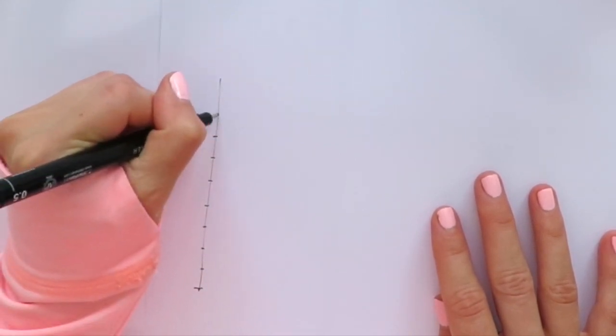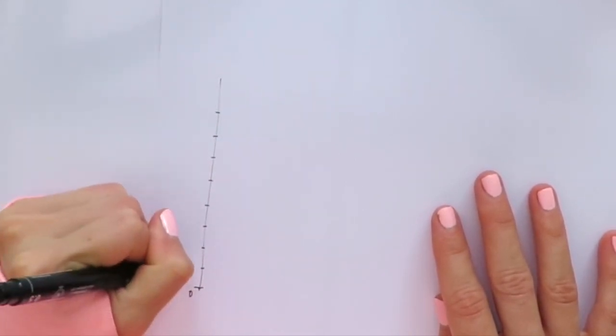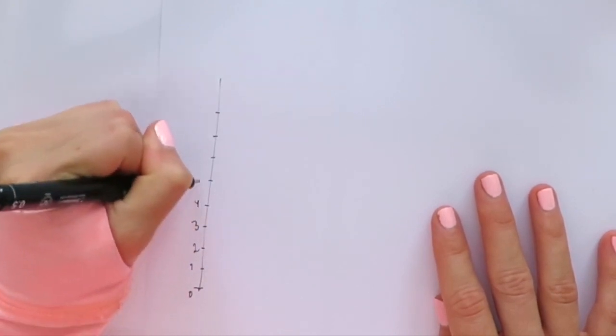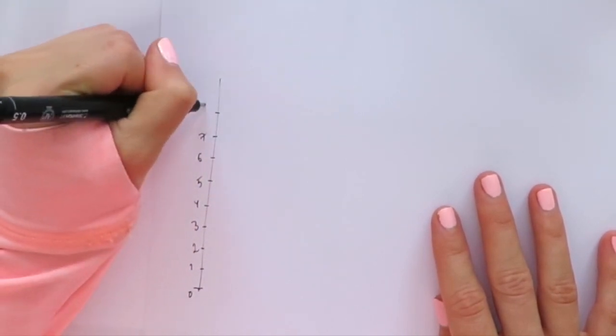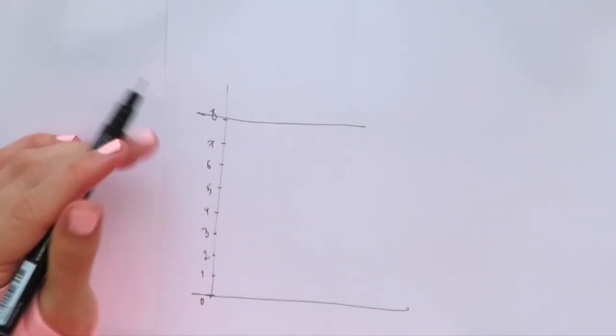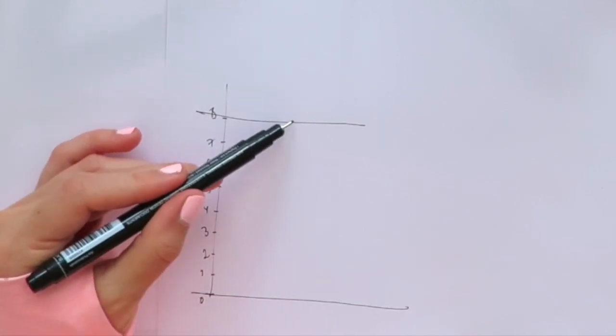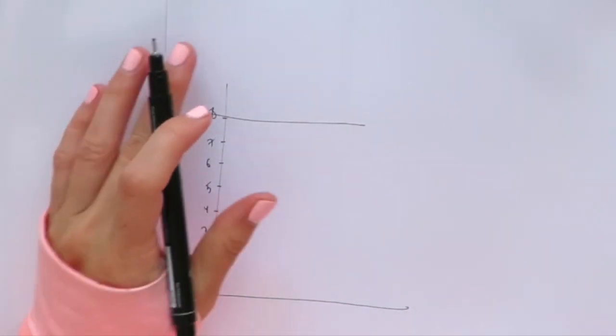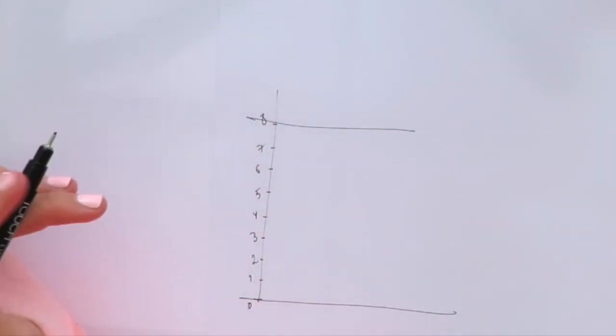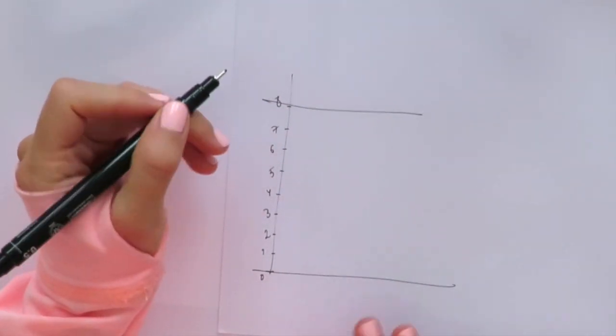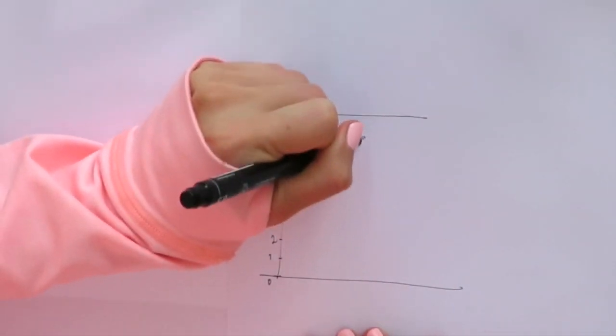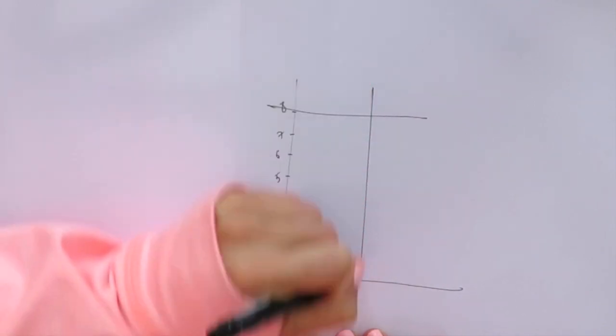I was taught this technique at the art academy in St. Petersburg during my anatomy classes. A lot of fashion illustrators use nine or ten heads technique, but it's always great to start with the basics. Eight heads technique is the closest one to real body proportions.